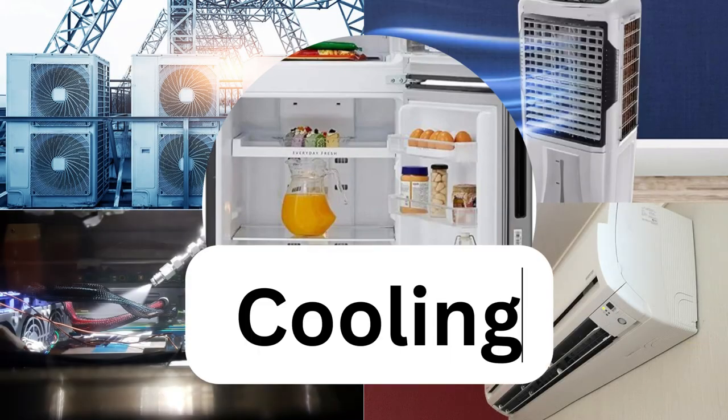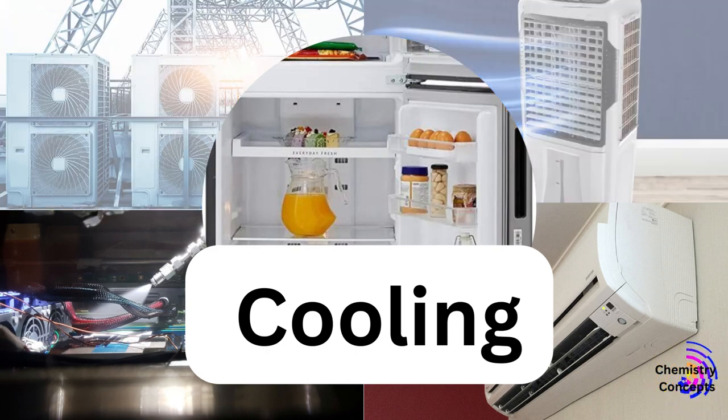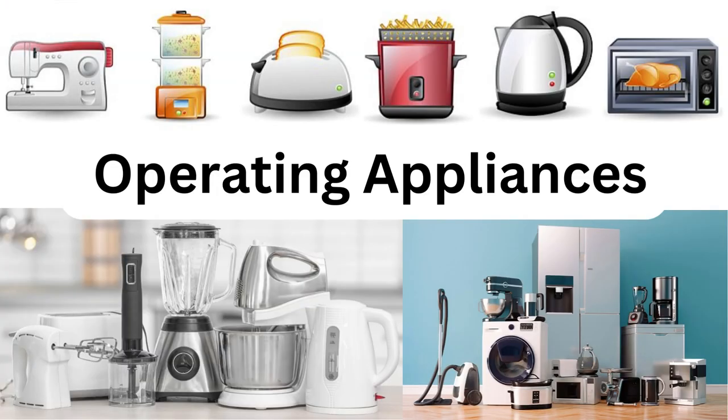For cooling, we can use an air conditioner, split, room cooler, refrigerator, fridge, and deep freezers. For operating appliances like electric kettle, toaster, juicer, blender, grinder, sewing machine, and different types of oven, we can use electricity.